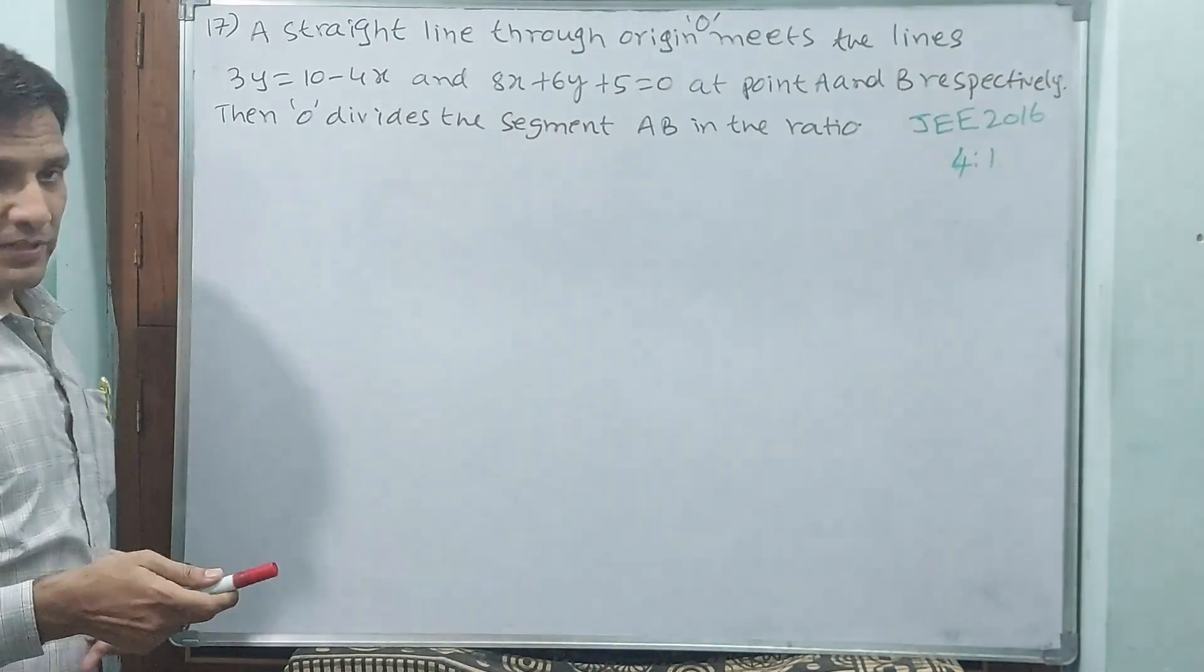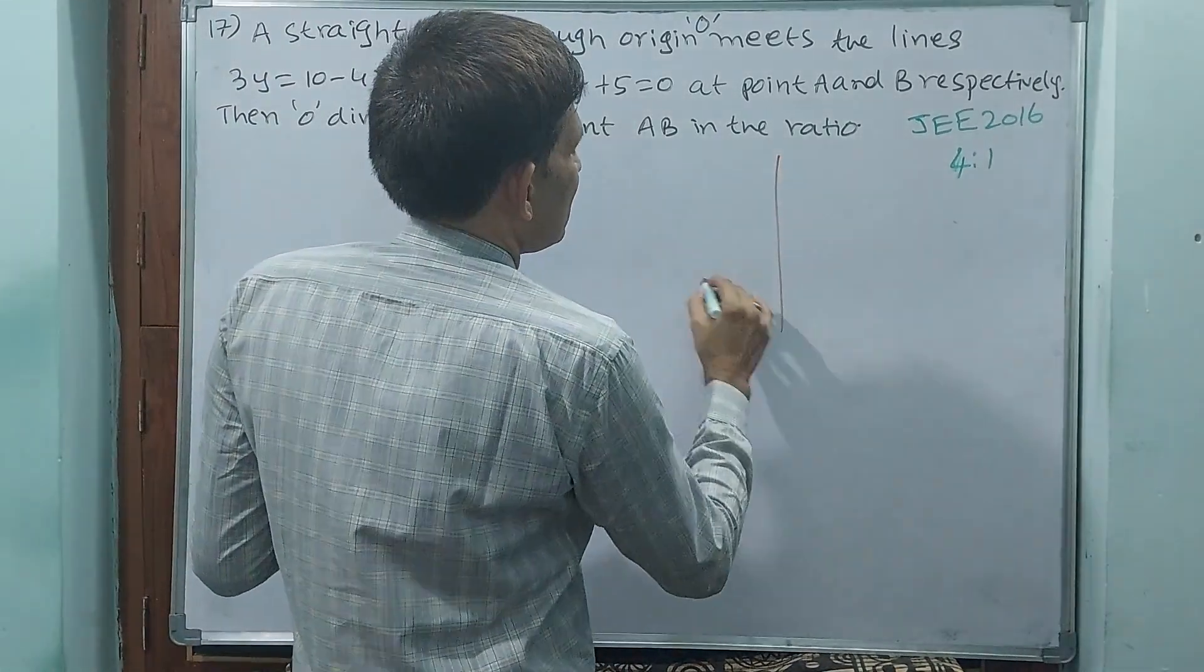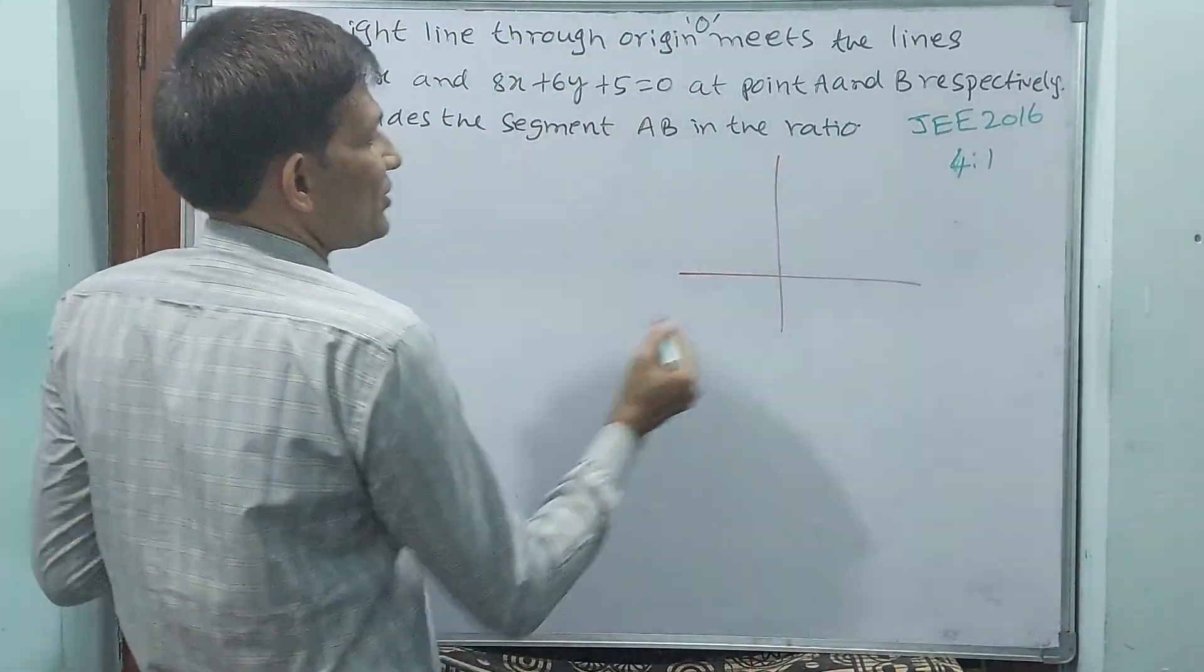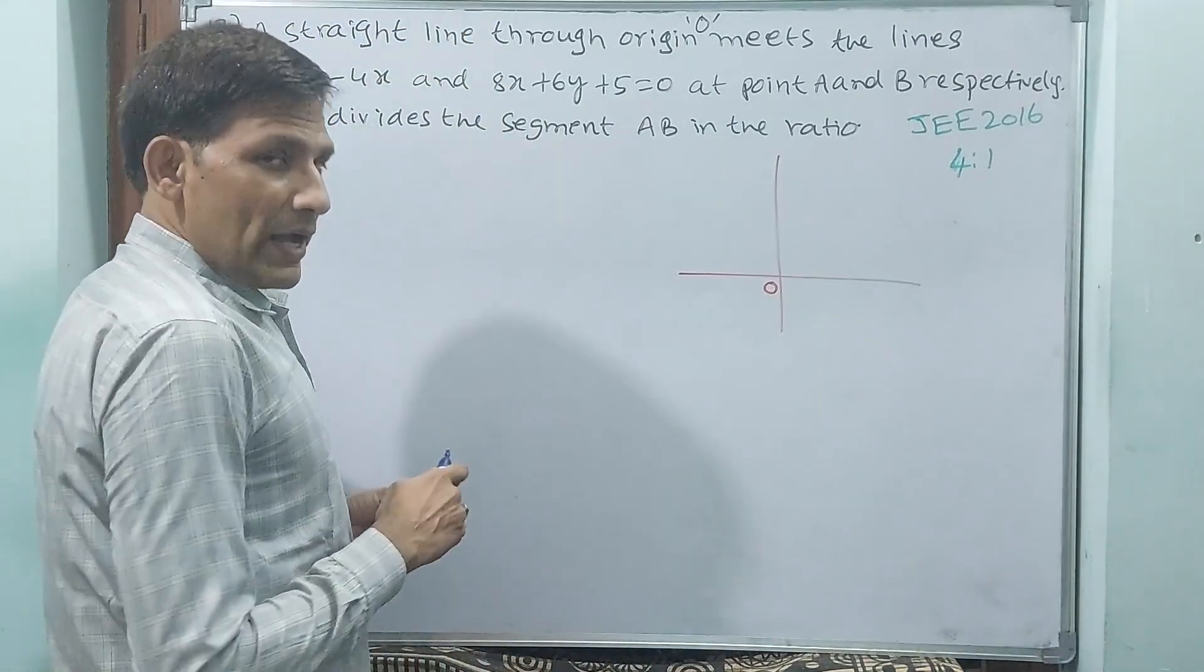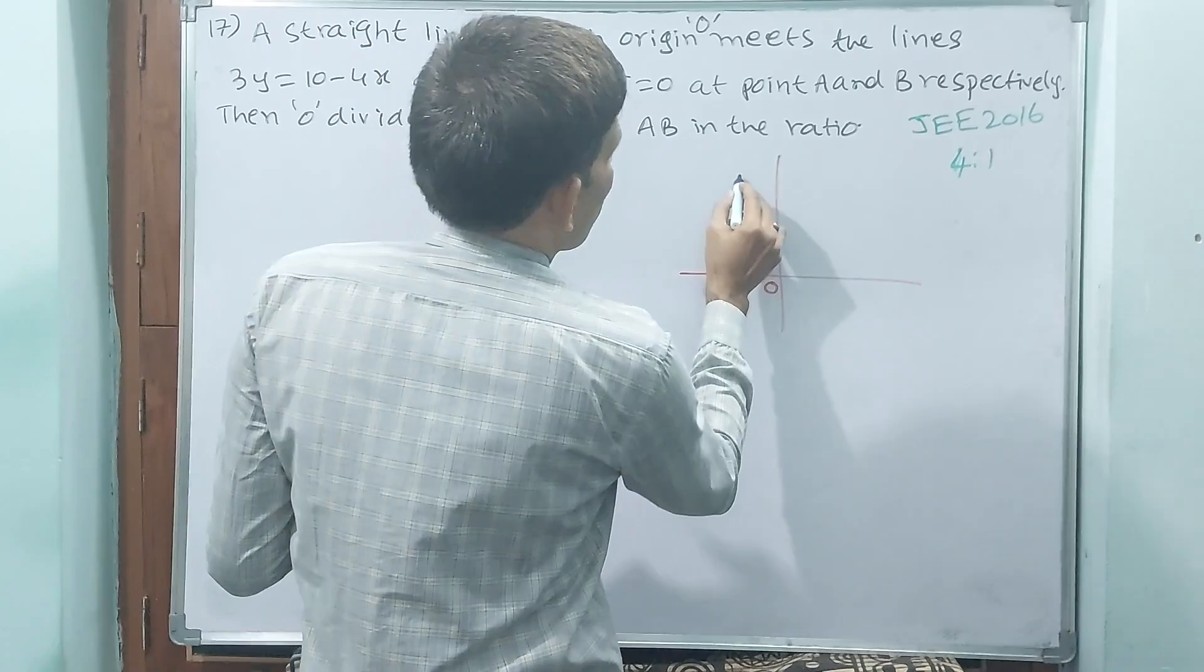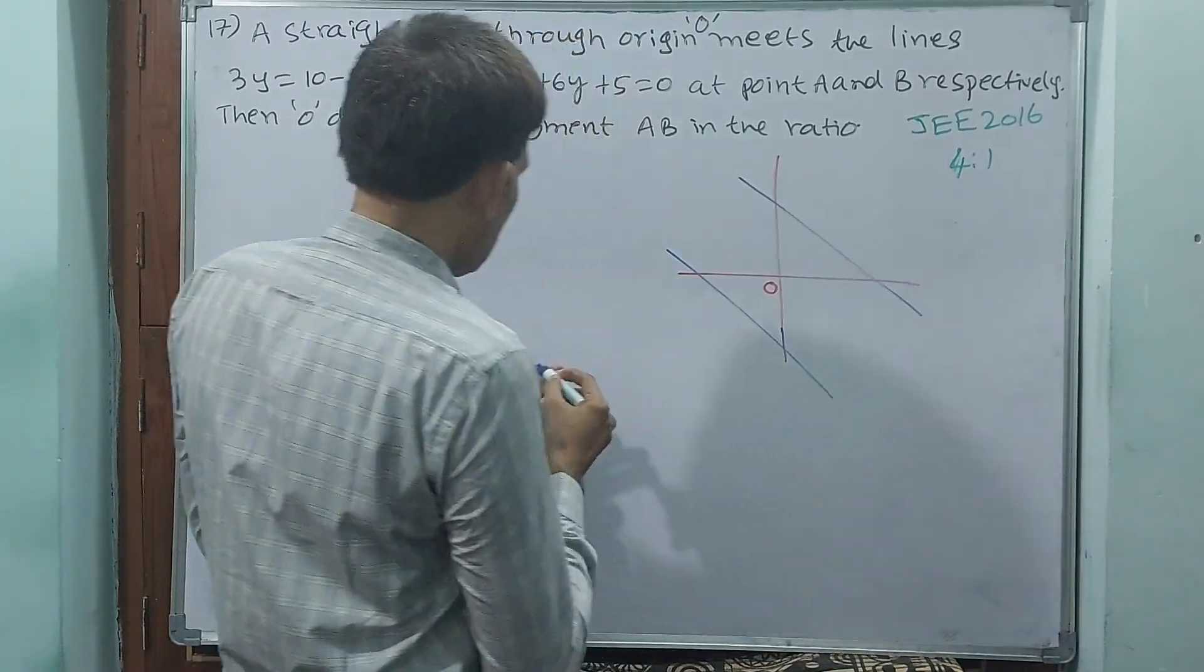Unless you draw the figure, you are unable to do this question. This is the x-y axis. This is origin O. See, two lines are there. These are the two lines.